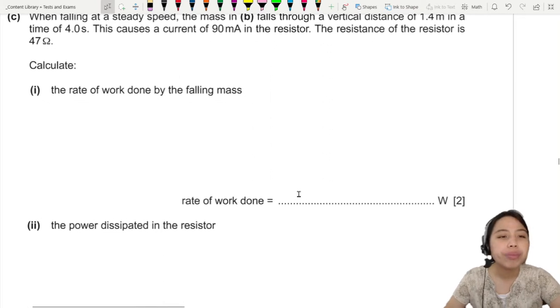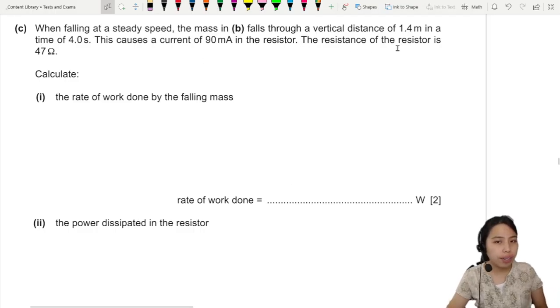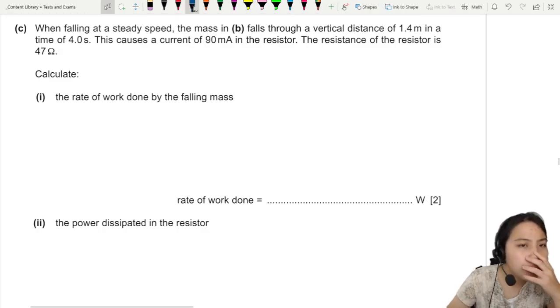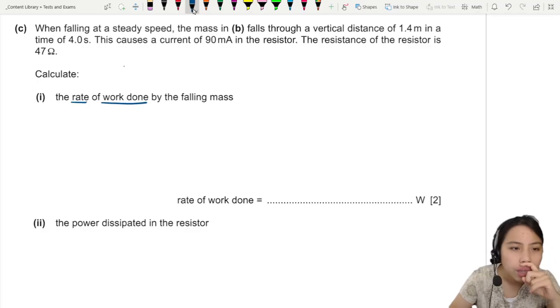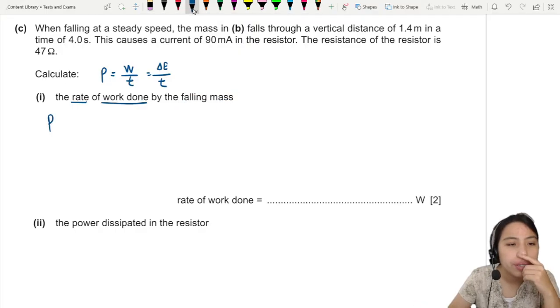After that though, they have to do calculation that involves circuits. When falling at a steady speed, the mass falls through a vertical distance and causes current in the resistor. Resistance is given. Calculate the rate of work done by the falling mass. Rate of work done. I think we gotta say, rate of work done, when you see the word rate, think of work done per time, which also happens to be power. Power is change in energy over time. So let's calculate for the falling mass.